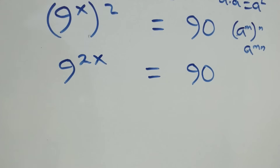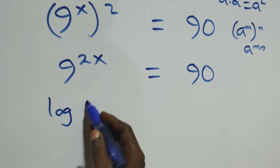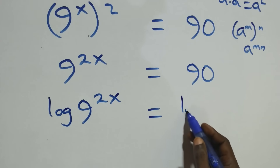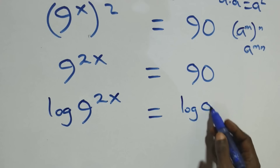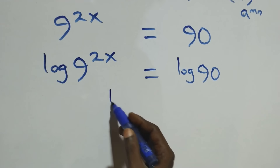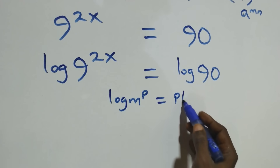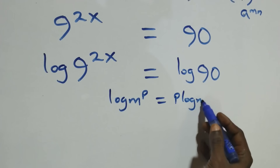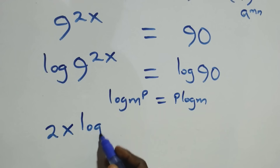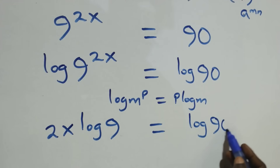The next step: we take the log on both sides, because here we have log of 9 raised to power 2x equals log 90. Then we apply the power rule of logarithm: log m raised to power p is the same as p·log m. So this becomes 2x·log 9 equals log 90.